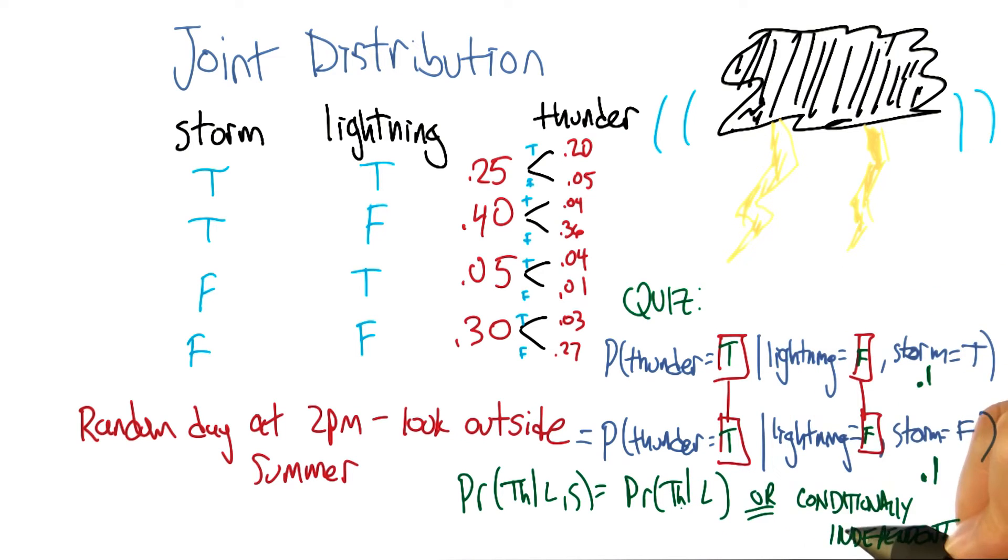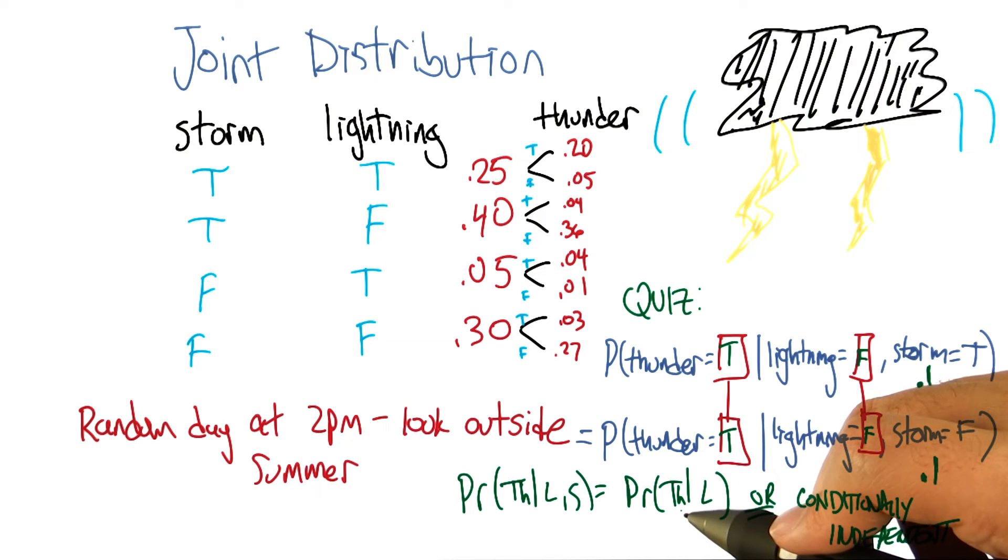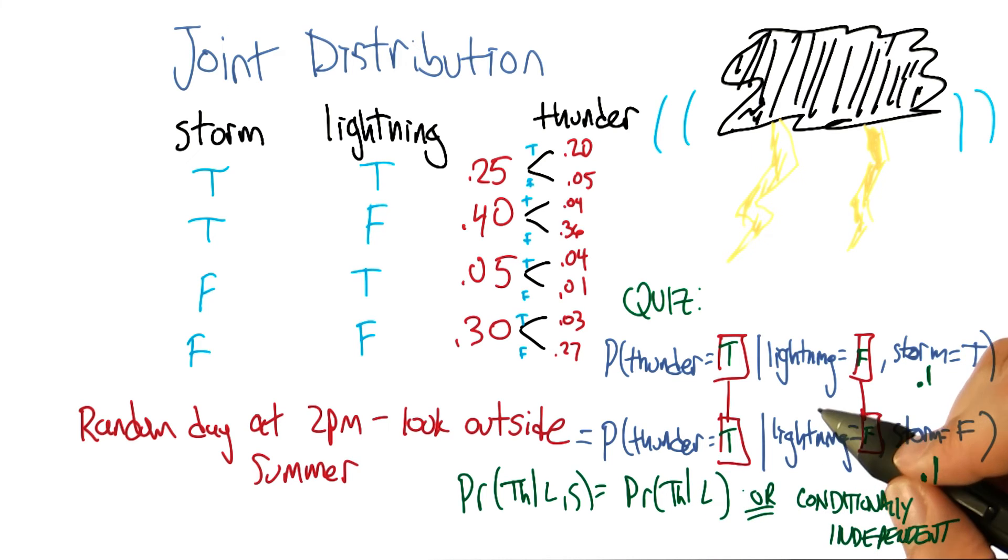Right. So the probability of thunder given lightning and storm is equal to the probability of thunder given lightning. That means that thunder and storm are conditionally independent given lightning. Or thunder is conditionally independent of storm given lightning. Sure. Very good.